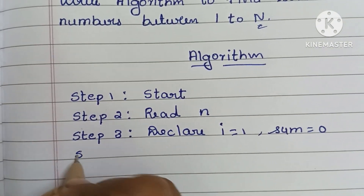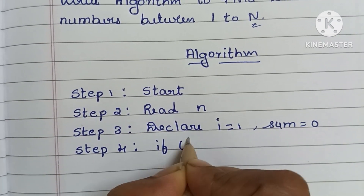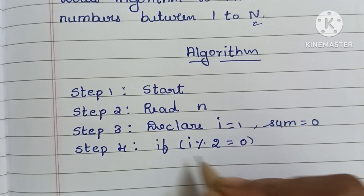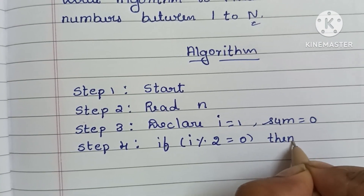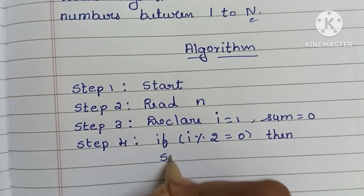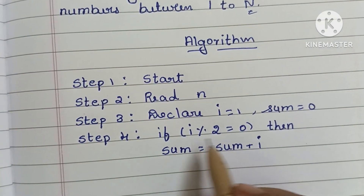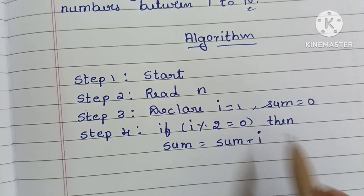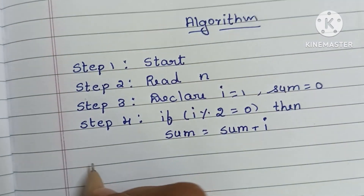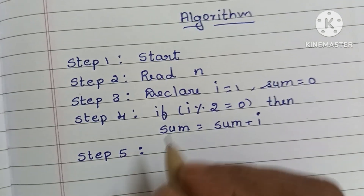In step 4, we have to check: if i modulo 2 is equal to 0, then i is an even number. So we execute sum equal to sum plus i. If this condition is true, we add i to sum. If this condition is false, it directly goes to step 5.